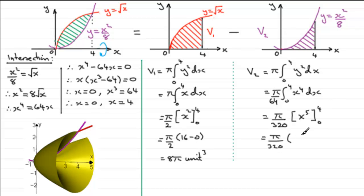And again if we put our values in here we're going to have pi over 320 and then 4 to the power 5 well that's 1024 subtract 0 to the power 5 well that's 0. And so we've got really 1024 pi over 320 and that will reduce down to 16 pi over 5. And again being a volume let's just say that's units cubed.